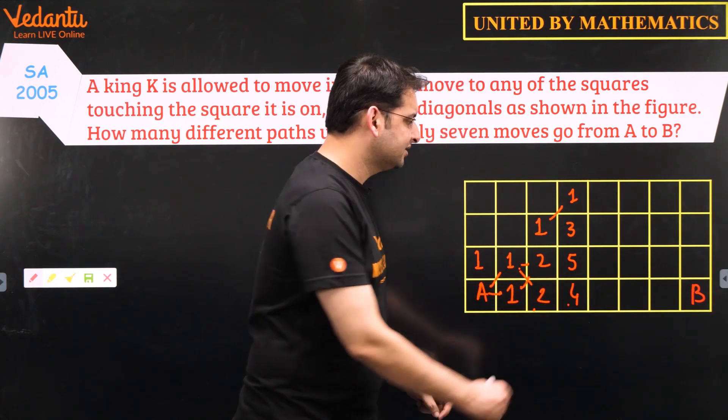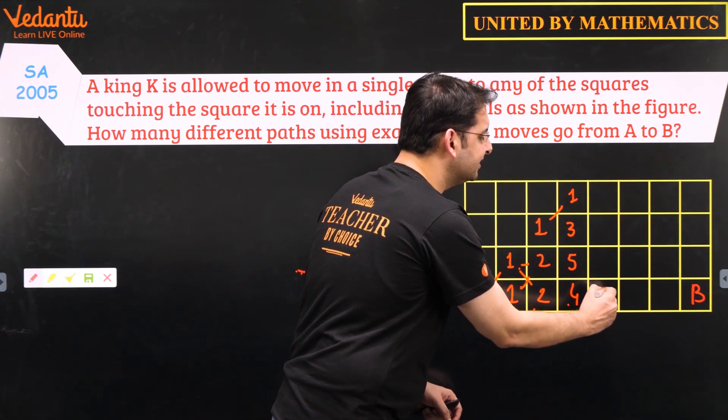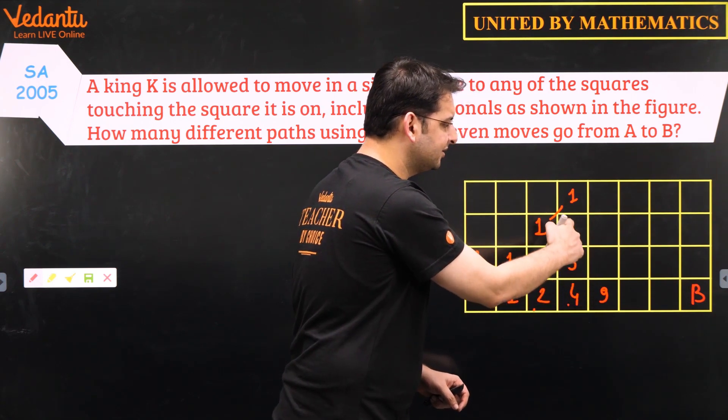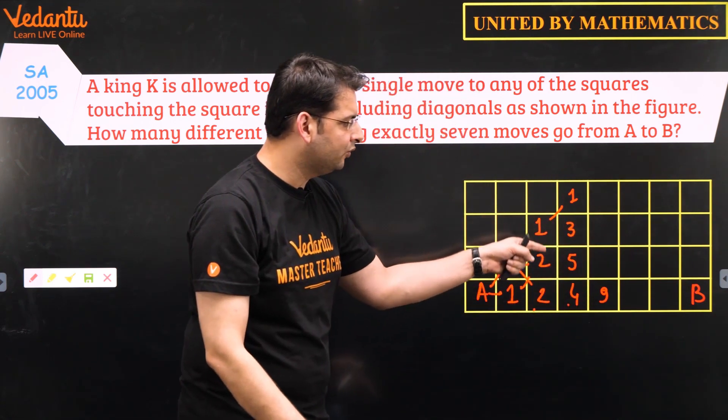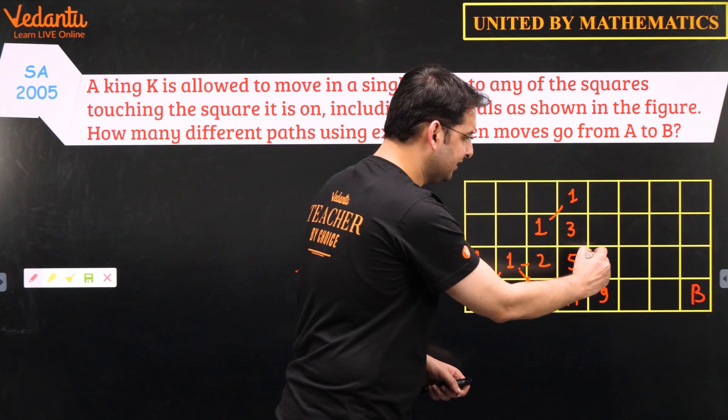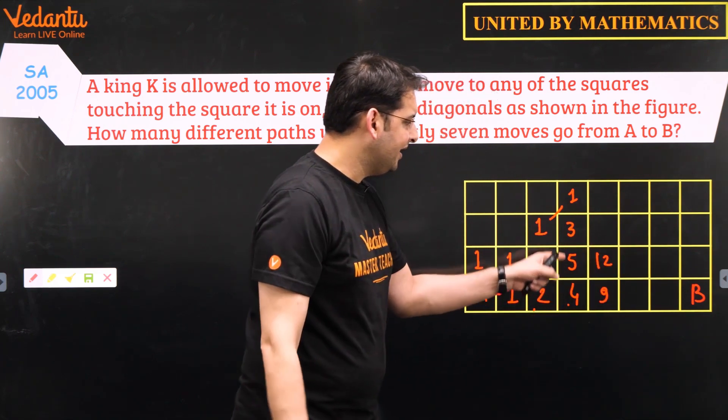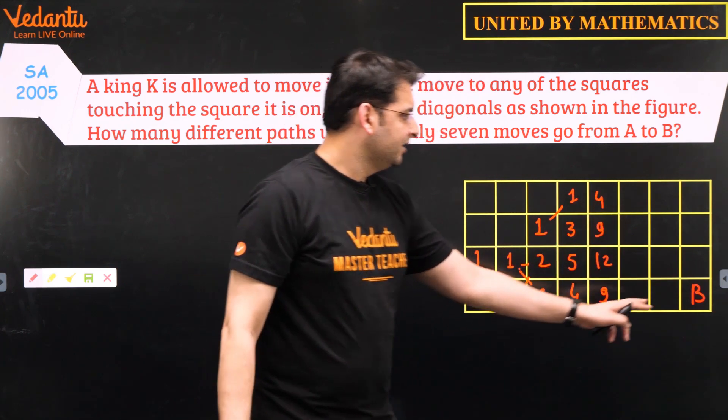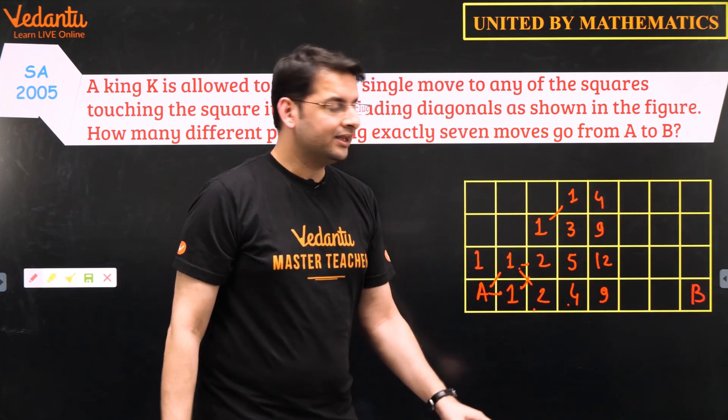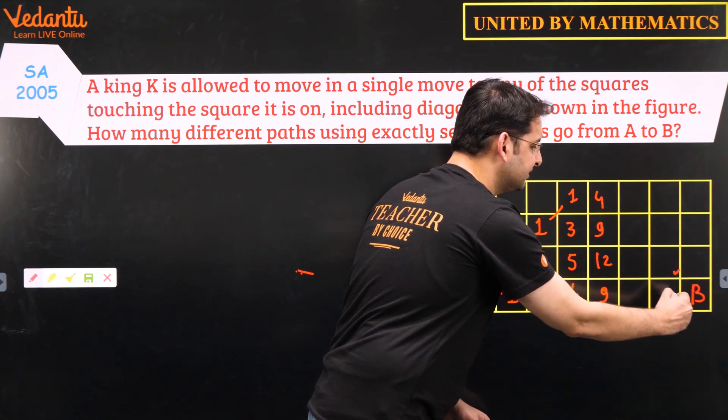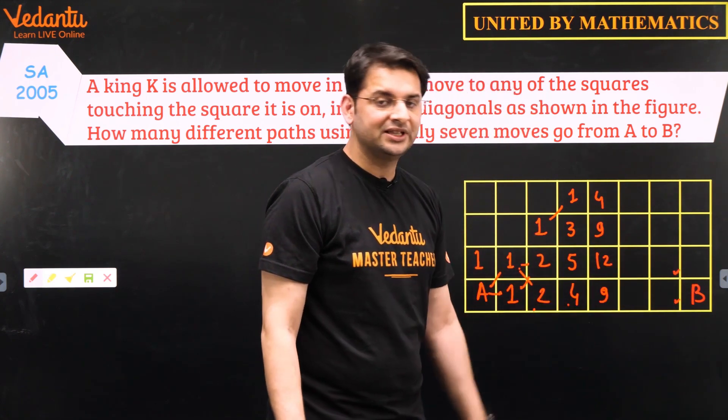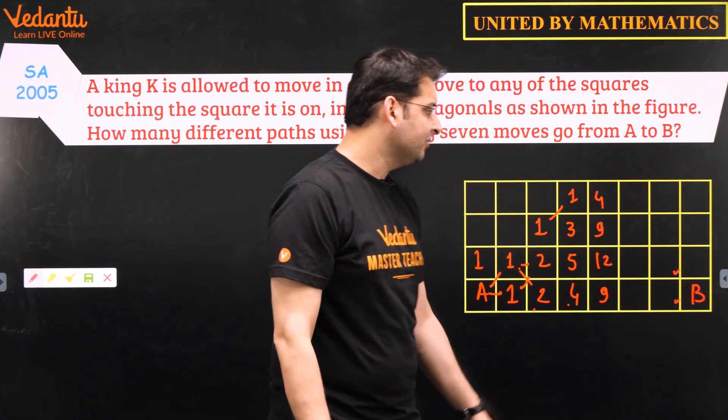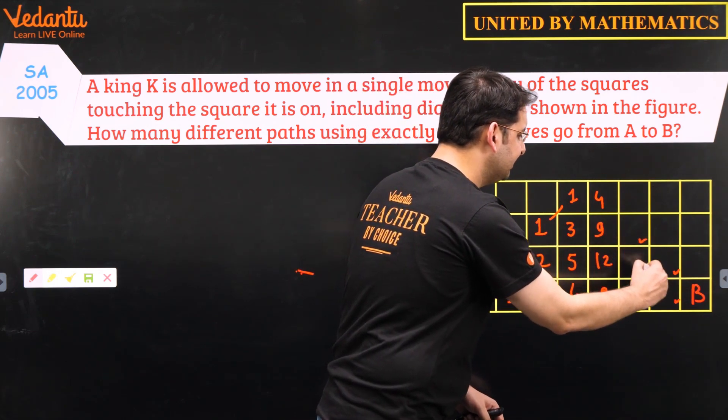Now to reach this box I will have to add 5 and 4 which is 9. To reach this box, of course the addition would be of 3, 4 and 5 which is 12. 5 plus 3 plus 1 gives me 9 and this is 4. To write the number in box B I need to add these 2 numbers. So we need to have these 2 numbers with us to find the number for box B. For this we need to have these 3 numbers.